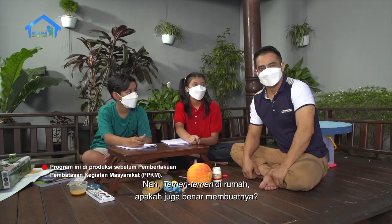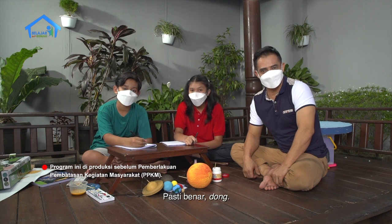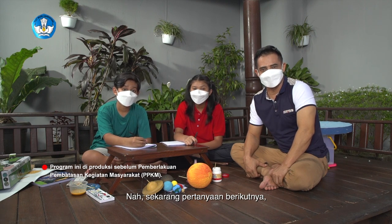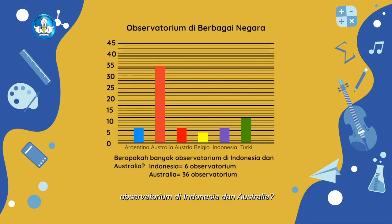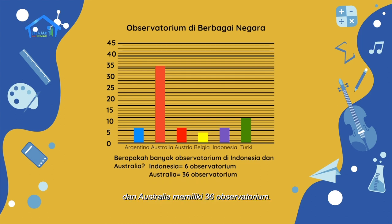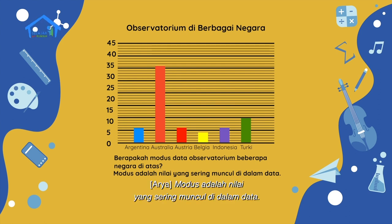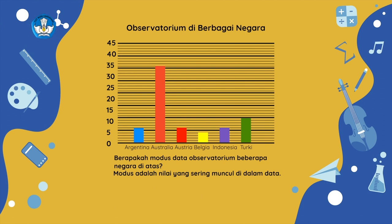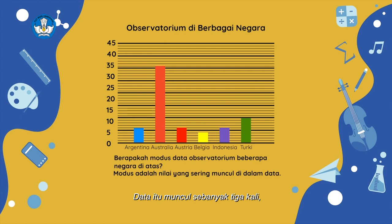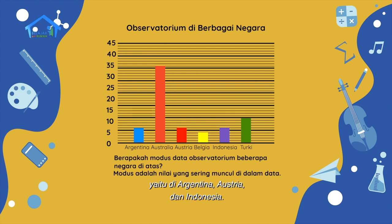Betul sekali! Nah, teman-teman di rumah, apakah juga benar membuatnya? Pasti benar dong. Nah, sekarang pertanyaan berikutnya: berapa banyakkah observatorium di Indonesia dan Australia? Indonesia memiliki enam observatorium dan Australia memiliki 36 observatorium. Pertanyaan berikutnya: berapakah modus data observatorium beberapa negara di atas? Modus adalah nilai yang sering muncul di dalam data. Maka, pada diagram nilai yang sering muncul adalah enam. Data itu muncul sebanyak tiga kali, yaitu di Argentina, Austria, dan Indonesia.